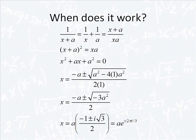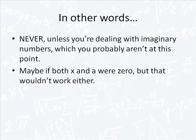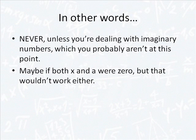But point of the matter is, when would this actually work? Never. Unless you're dealing with imaginary numbers, and even still, it's probably not going to work. Maybe there's a possibility where, like, if both a and x were 0, but then you would have 1 divided by 0 to start with. And well, that just really makes no sense.